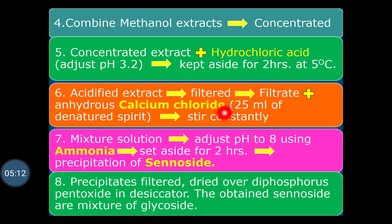The mixture is stirred continuously and the solution pH is adjusted to 8 by using ammonia, then set aside for 2 hours so that precipitation of the sennoside occurs. The precipitate is collected by filtration and dried over diphosphorus pentoxide in a desiccator. The obtained sennosides are a mixture of Sennoside A, B, C and D. In this way, sennosides present in Senna can be isolated by this first method.